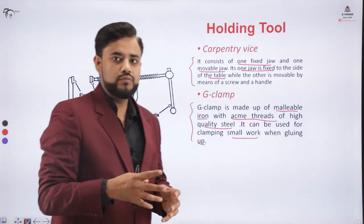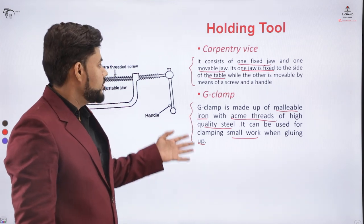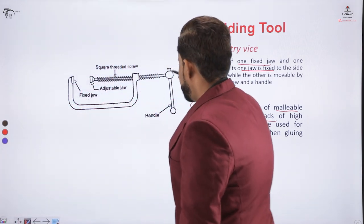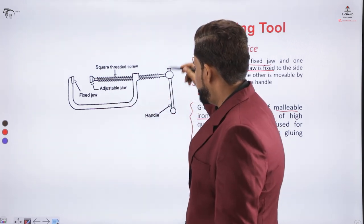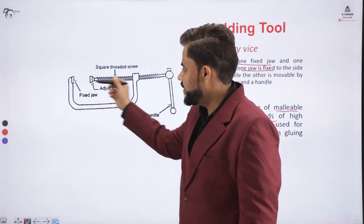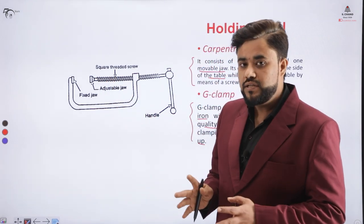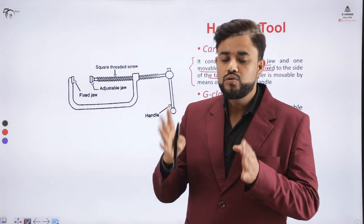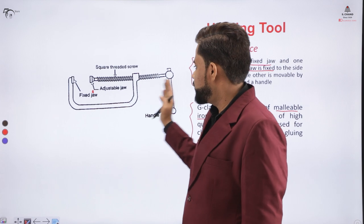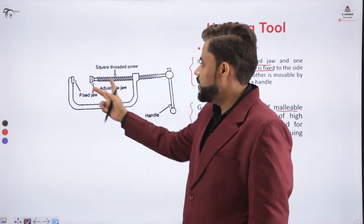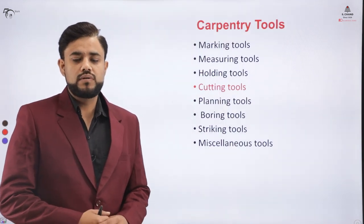Whenever we want to glue up the wood together for smaller quantity work, we use a G-Clamp. This G-Clamp has a handle with square threads. When the operator rotates the handle, it comes in contact with the fixed jaw, and in between the two we keep the wooden articles together. It is majorly used for gluing operations — whenever we want two wooden articles to be glued together and held for some time, we use a G-Clamp and tighten those articles together.